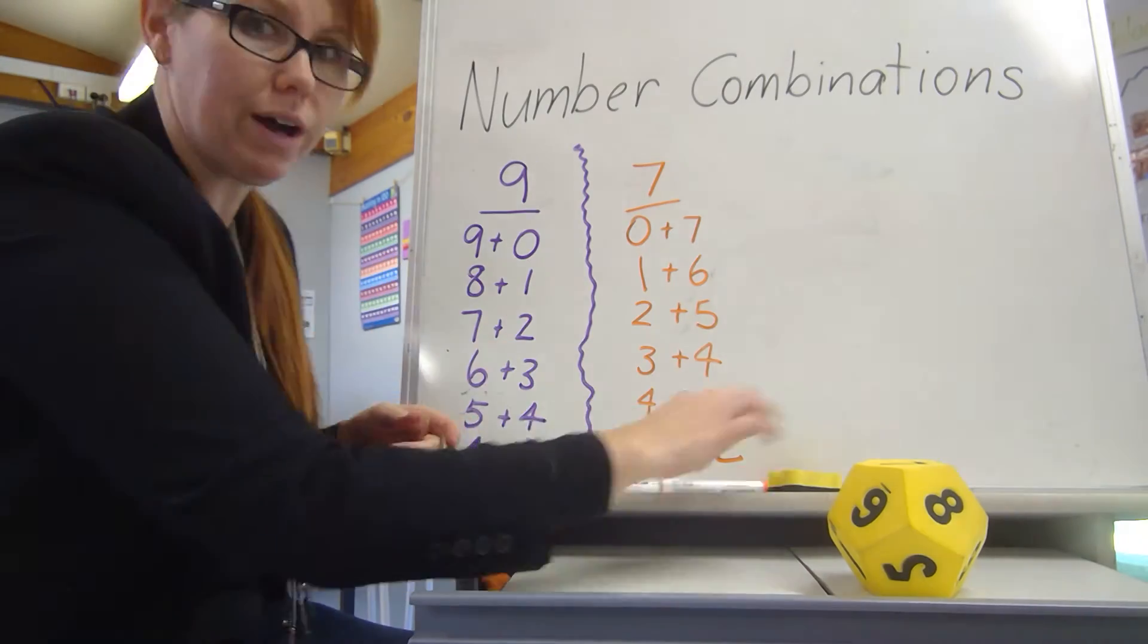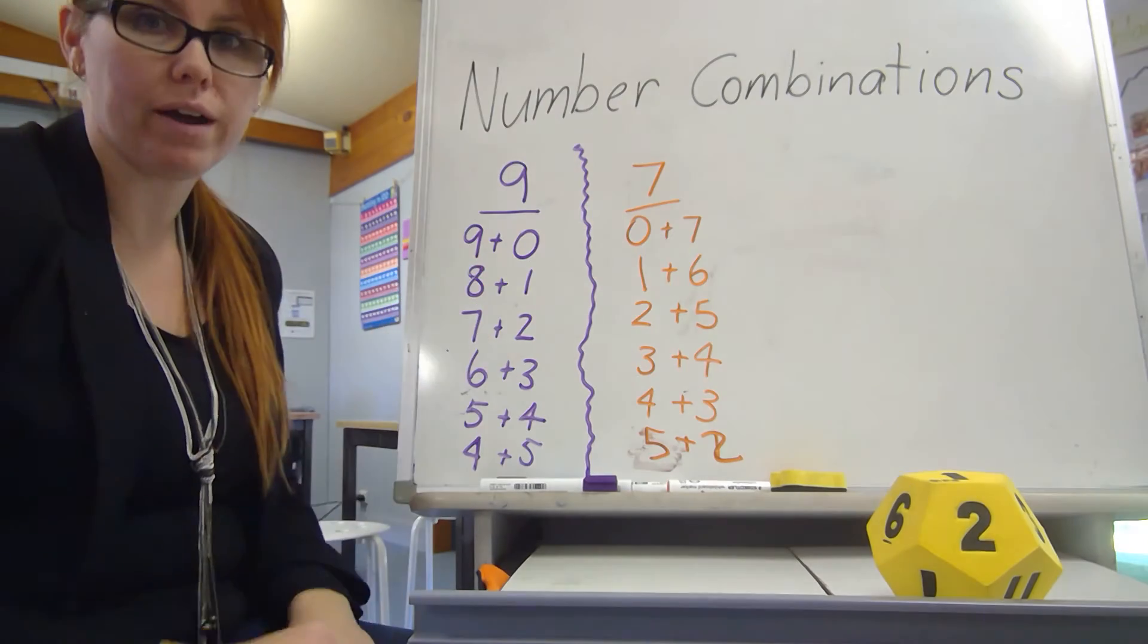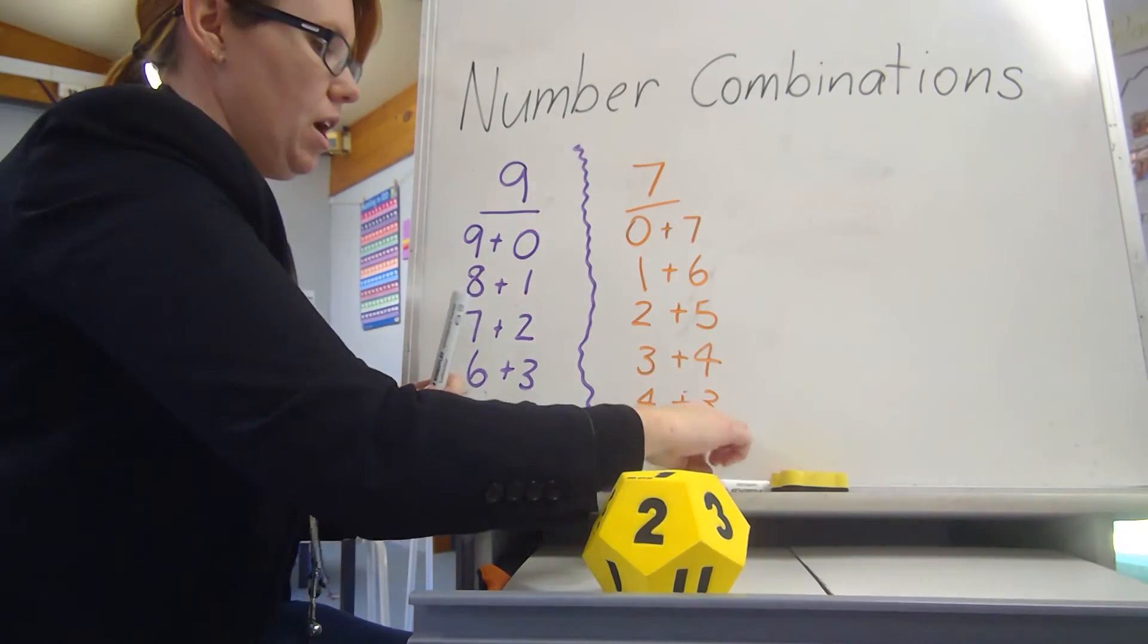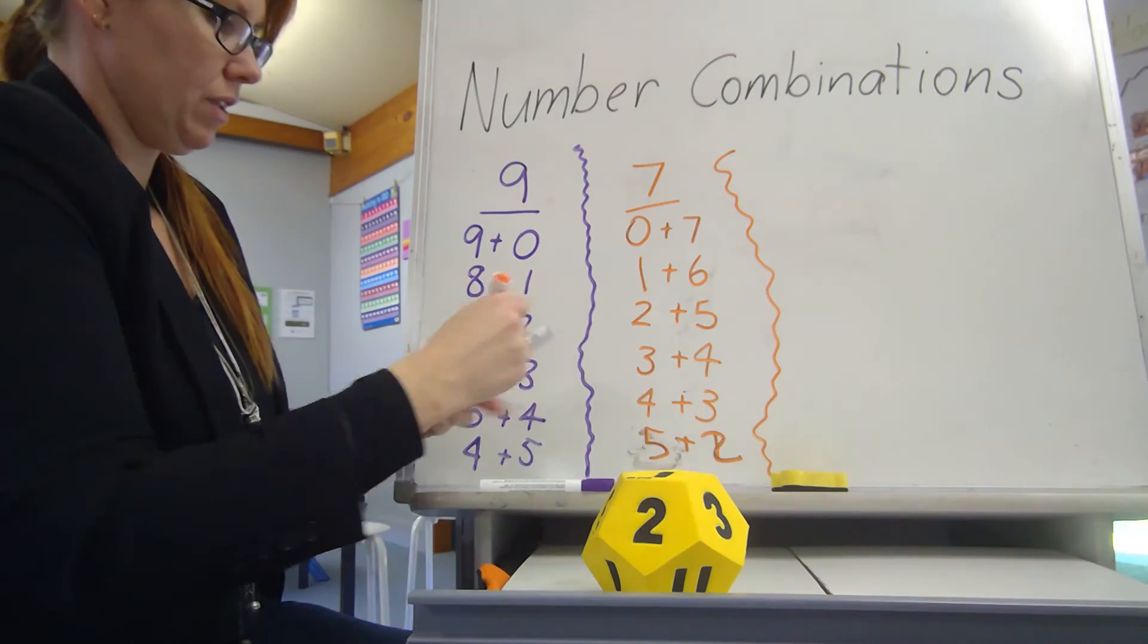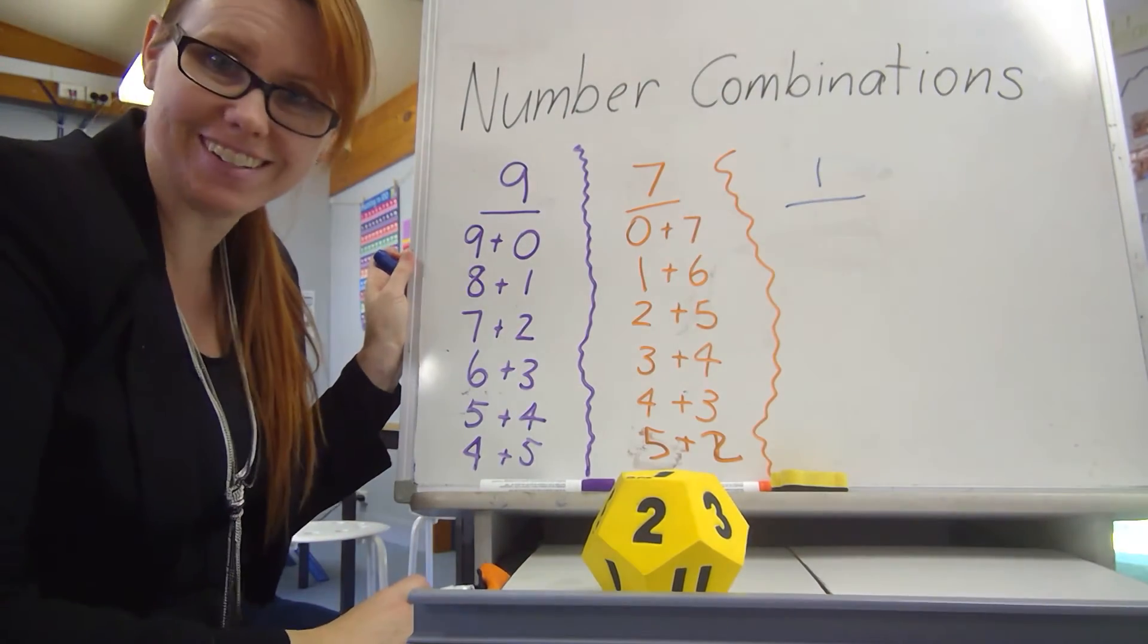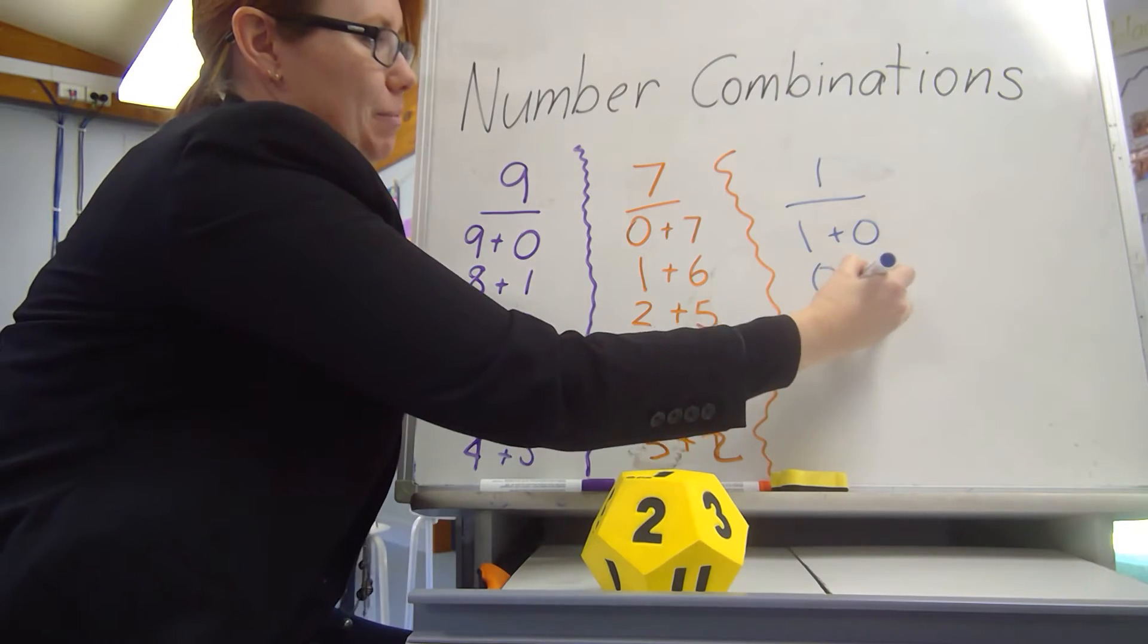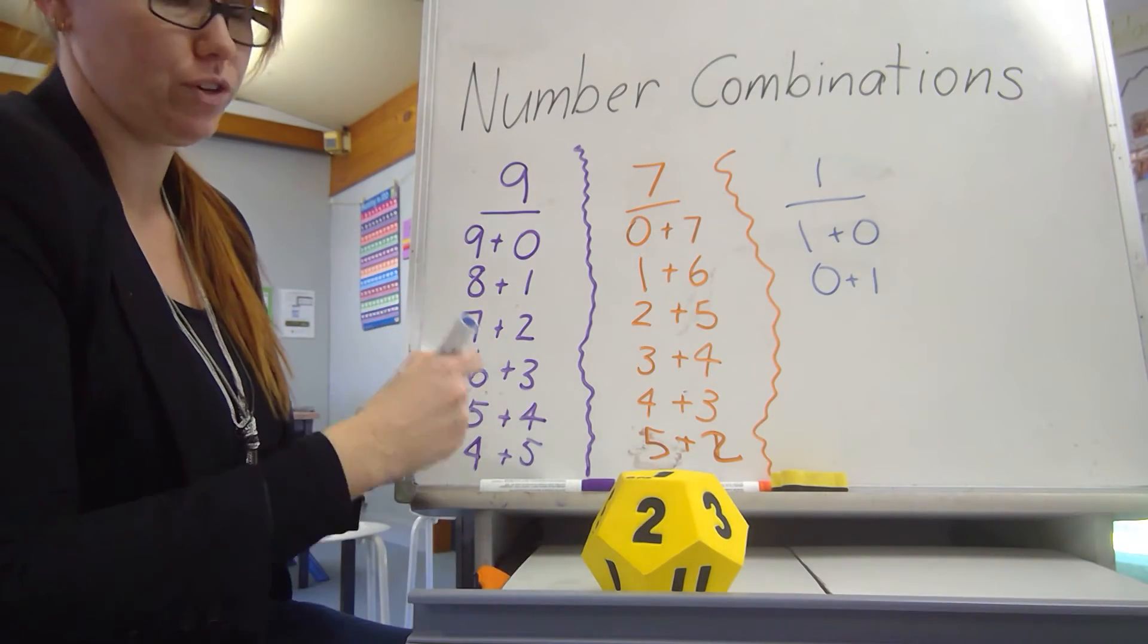I'm going to roll one more and see if you can keep up with me. 1. I rolled a 1. That's dodgy. Okay. We'll do it though. I rolled a 1. We will do it. How many number combinations do you think we can have where 1 is the answer? 1 plus 0, 0 plus 1. Any others? Not for addition anyway.